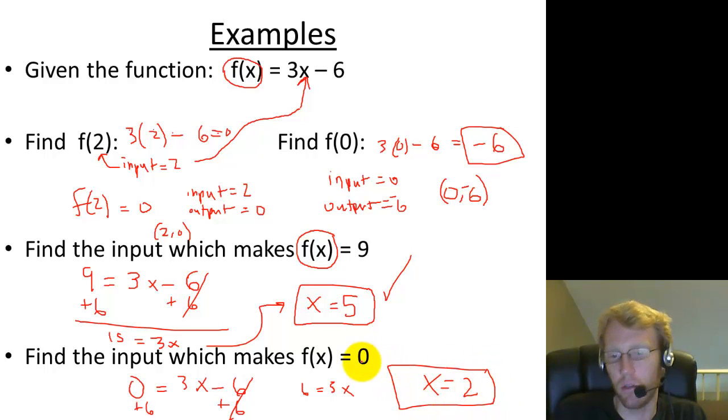So when the input is 2, the output is 0. Well, that's something we already knew, because that was what the first problem was. When the input was 2, we found the output to be 0. So then if the output is 0, the input is 2, it makes sense. It matches up.